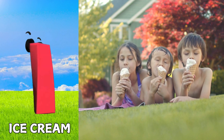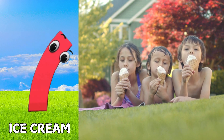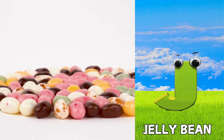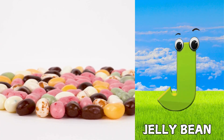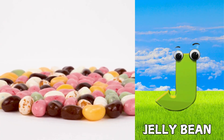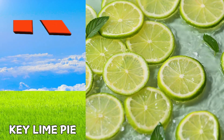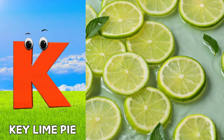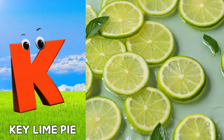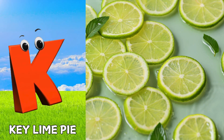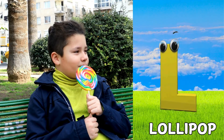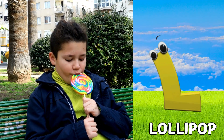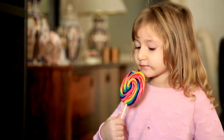I is for Ice Cream. J is for Jelly Bean. K is for Key Lime Pie. L is for Lollipop.